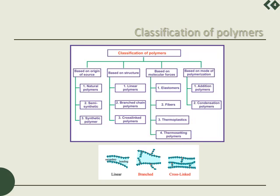Thermoplastic and thermosetting polymer classification is also based on the effect of thermal forces. On heating, thermoplastic polymers become soft, whereas thermosetting polymers do not — they degrade. Based on the type of polymerization process, we have addition polymers and condensation polymers.